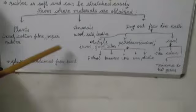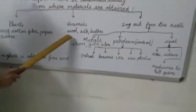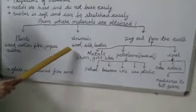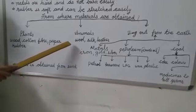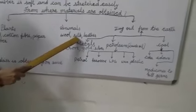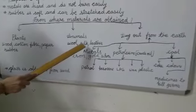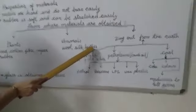From animals, we get wool. You know that, from where do we get wool? We get wool from sheep. Silk, we get silk from silkworm. And leather, it is the skin of the animal.